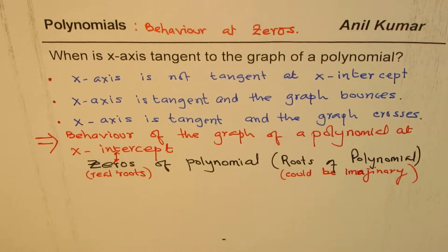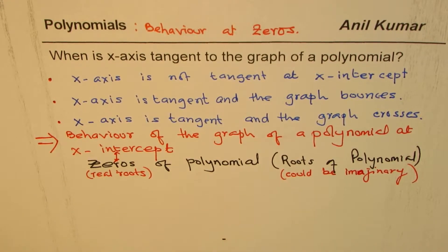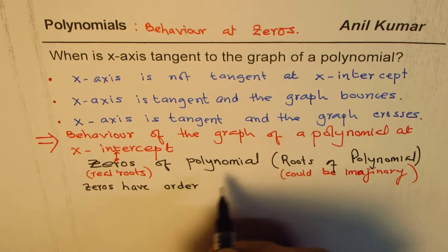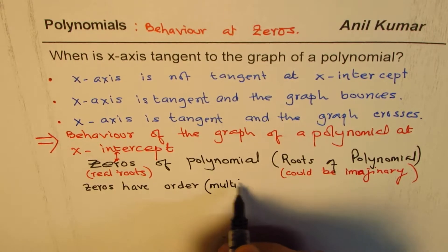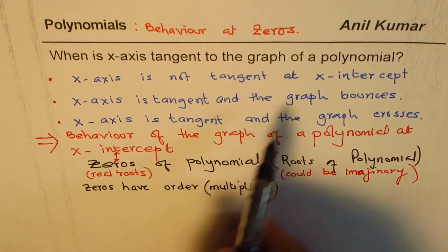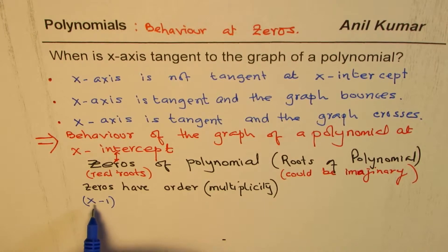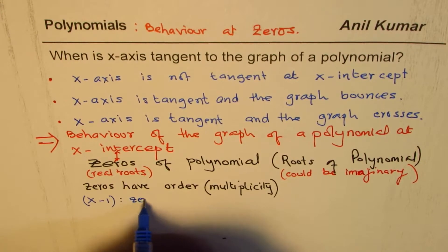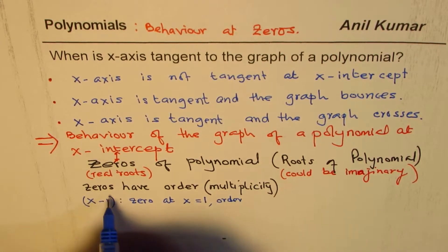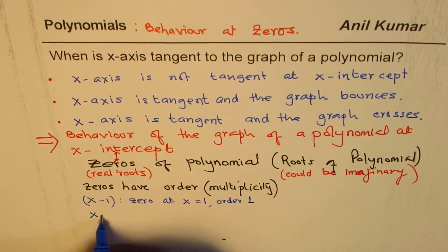The key difference is because zeros have order, or multiplicity. For example, the term (x − 1) gives a zero at x = 1. The order or multiplicity is 1 since the degree is 1. This is the first example.